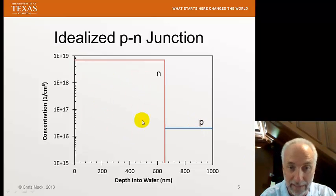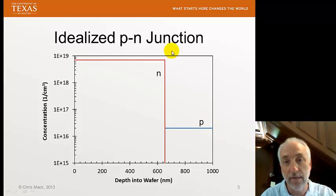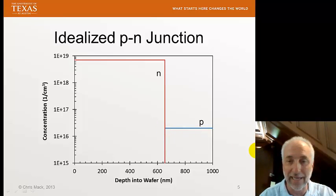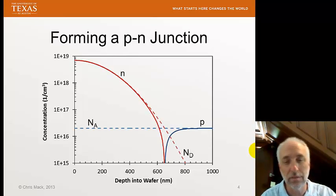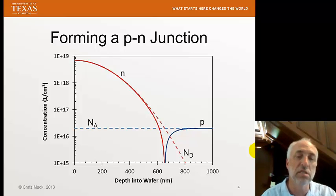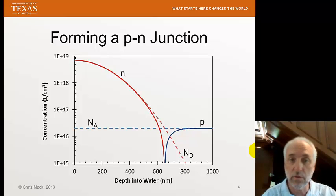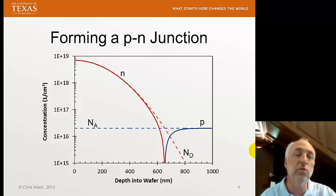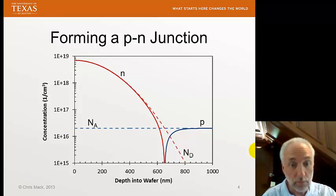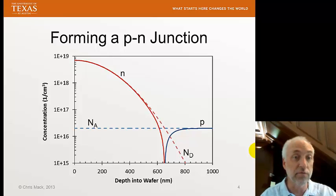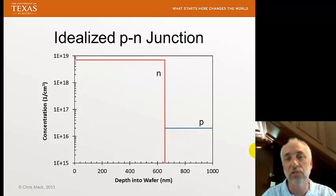We're going to approximate the actual concentration profile as a step function — our idealized P-N junction. On one side we have all N at a uniform concentration; on the other side, all P at a uniform concentration, with an abrupt step at the junction. Obviously that's not exactly what it really is, but for analysis purposes it's a reasonable approximation. It helps us understand the physics and derive simple equations for P-N junction behavior. When more exact results are needed, numerical simulators can be used, though we'll stick to this idealized junction in this class.